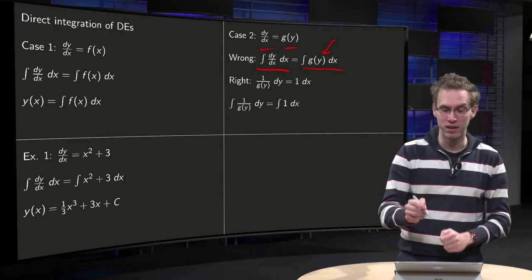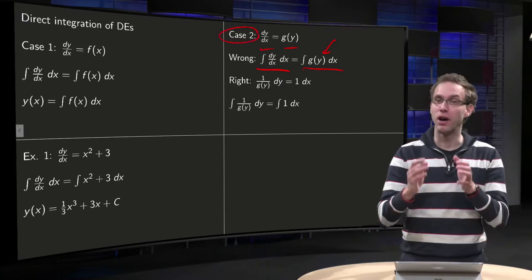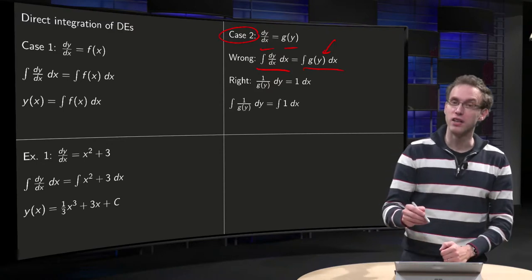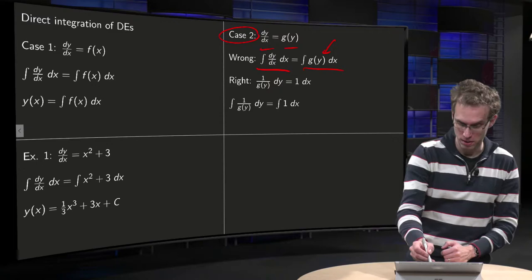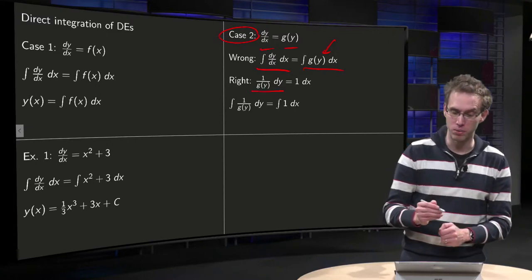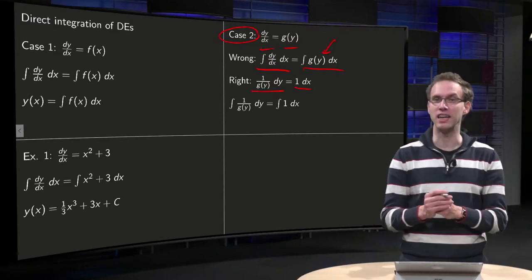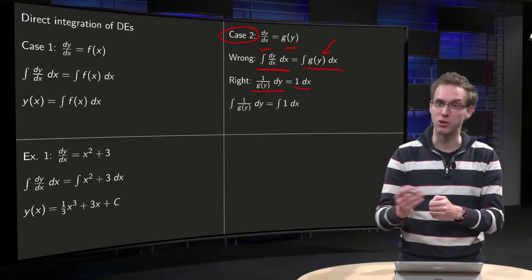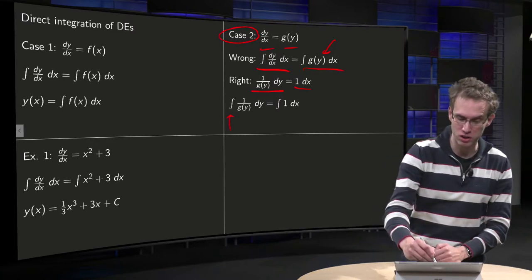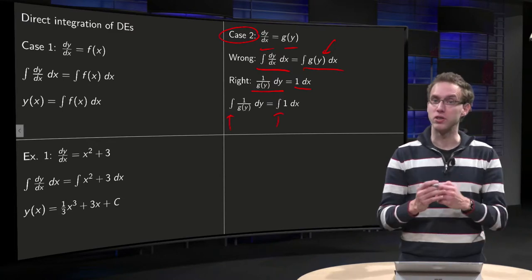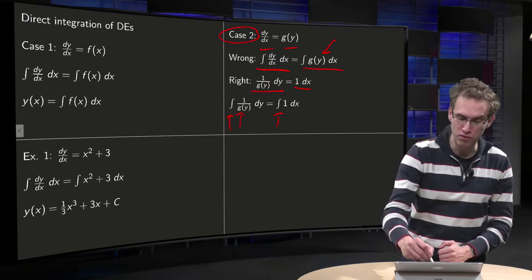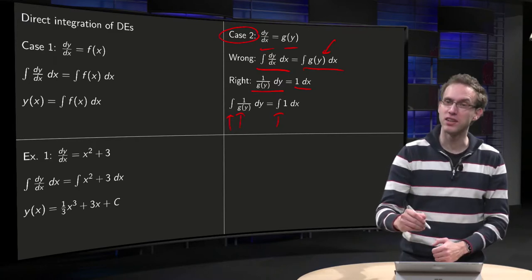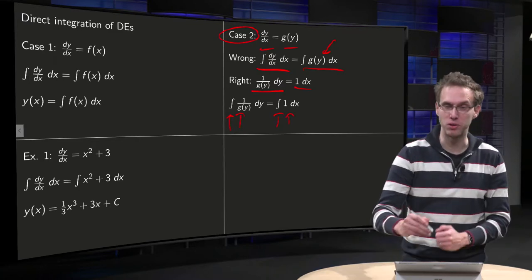So if we have the second case, we have to do something else. We can divide by g(y), and then we get 1 over g(y) dy equals 1 times dx. Then we have only y's on the left-hand side and only x's on the right-hand side. We put an integral sign on each side: integrate 1 over g(y) with respect to y on the left-hand side — that's possible — and integrate 1 with respect to x on the right-hand side.